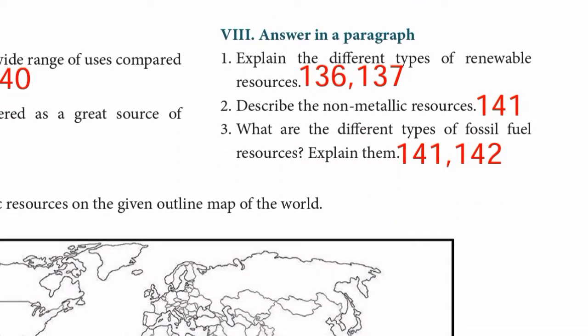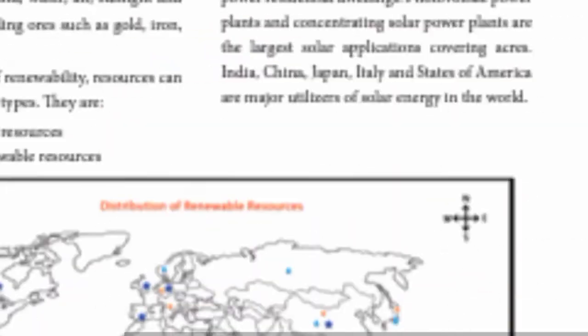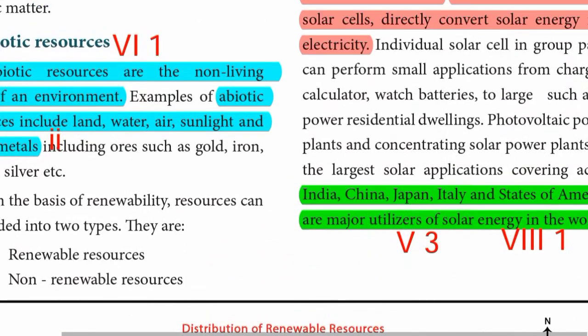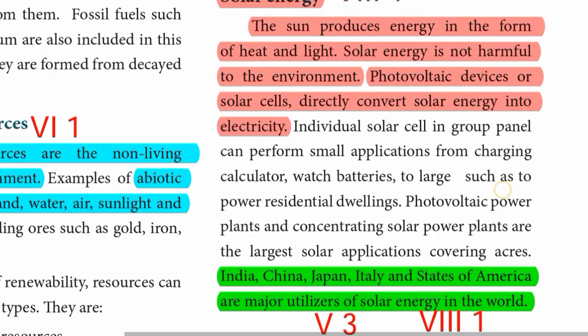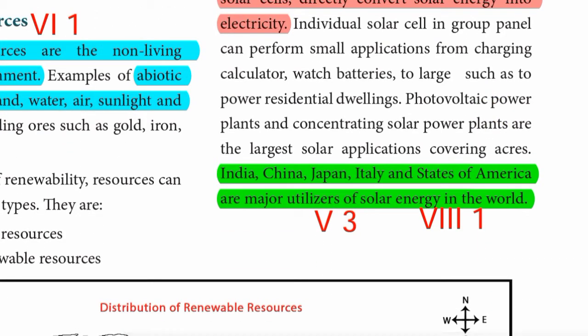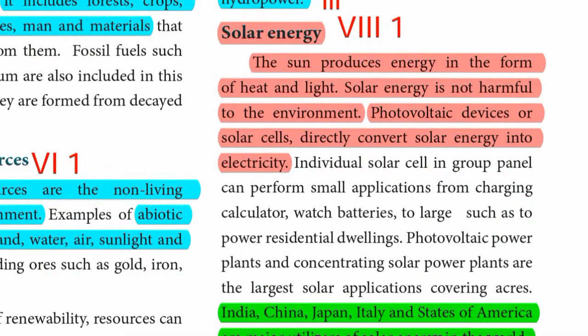Moving to Roman numeral 8, answer in a paragraph - first question: Explain the different types of renewable resources. From page numbers 136 and 137, covering different types of renewable and non-renewable sources. Solar energy: the sun produces solar energy in the form of heat and light. Solar energy is not harmful to the environment. Photovoltaic devices or solar cells directly convert solar energy into electricity. India, China, Japan, Italy and United States of America are major utilizers of solar energy in the world.